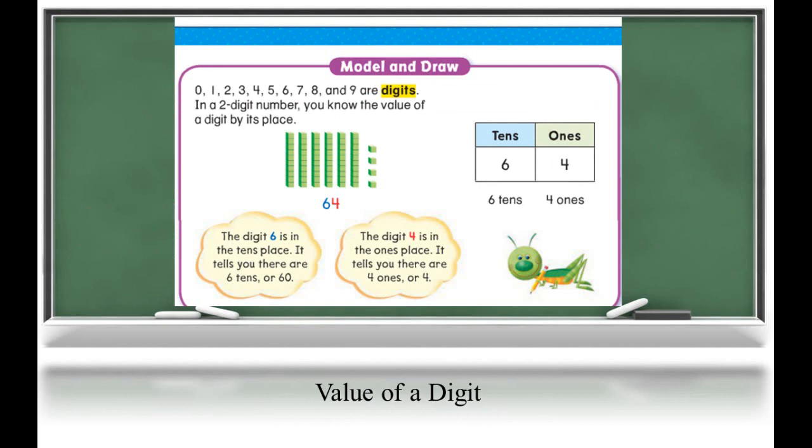Students will interact most often with the standard form of numbers, meaning must be attached to the position of the digit. For example, in the number 64, the digit 6 is located to the left of the 4, positioning it in the tens place. The 6 represents 6 tens, or 60. The digit 4 is located in the ones place, representing 4 ones.